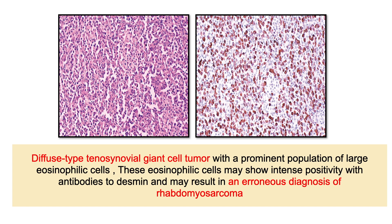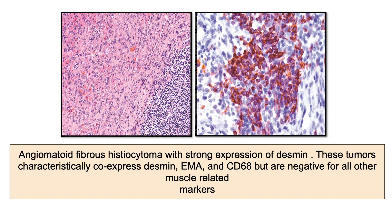Caution is required with angiomatoid fibrous histiocytoma, which characteristically co-expresses desmin, EMA, and CD68, but is negative for all other muscle-related markers. Although desmin is a highly sensitive marker of myogenous sarcoma, it may be expressed in a variety of non-myogenous tumors. The most specific markers of rhabdomyosarcoma are antibodies to myogenin.